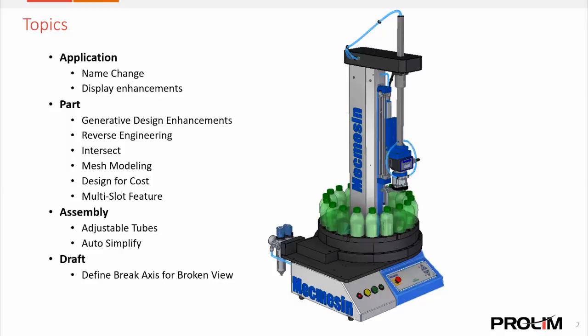To begin with, we'll be taking a look at some things inside of the application that have changed, including the name. We'll also look at some display enhancements added in the part environment, enhancements done to generative design and reverse engineering, as well as some new capability added to the intersect surfacing command. Additional functionality has been added into mesh modeling, a feature for design for cost, and an enhancement to the slot command, which has been asked for for quite a while. In the assembly environment we'll look at new adjustable tubes, an auto simplify command, and a couple new options in the draft environment.